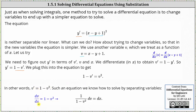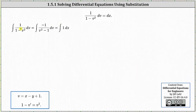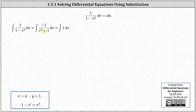Replacing v prime with dv/dx, we have dv/dx equals one minus v squared. Separating the variables, we have one divided by the quantity one minus v squared, dv, equals dx. Now we integrate both sides. We can multiply the numerator and denominator of the fraction on the left by negative one, giving us negative one divided by the quantity v squared minus one, and we'll use this form for partial fraction decomposition.